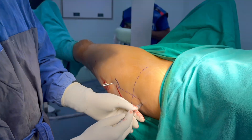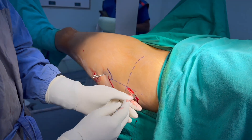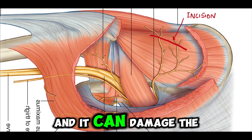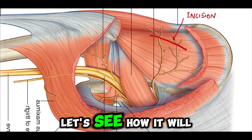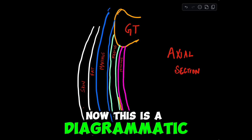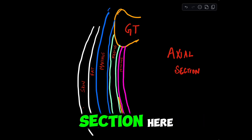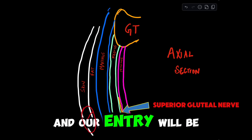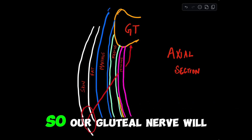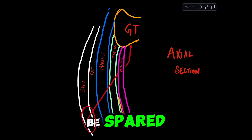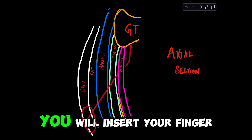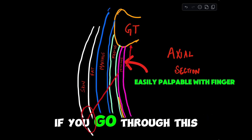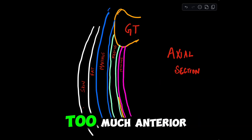This is my incision. You might say the incision is too proximal and it could damage the superior gluteal nerve — let's see why it will not. In this diagrammatic axial section, you can see that the superior gluteal nerve is deep to the gluteus medius, and our entry will be here. So the gluteal nerve will be spared. You will insert your finger or the awl below the gluteus minimus. If you go through the minimus, your entry will be too anterior.